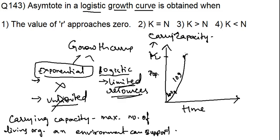Now here there will be a vertical... sorry, there will be a horizontal. It will become almost constant. This is the logistic growth curve.